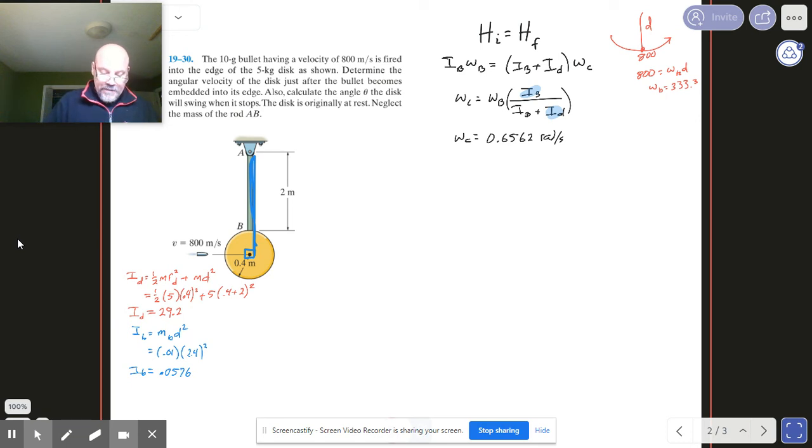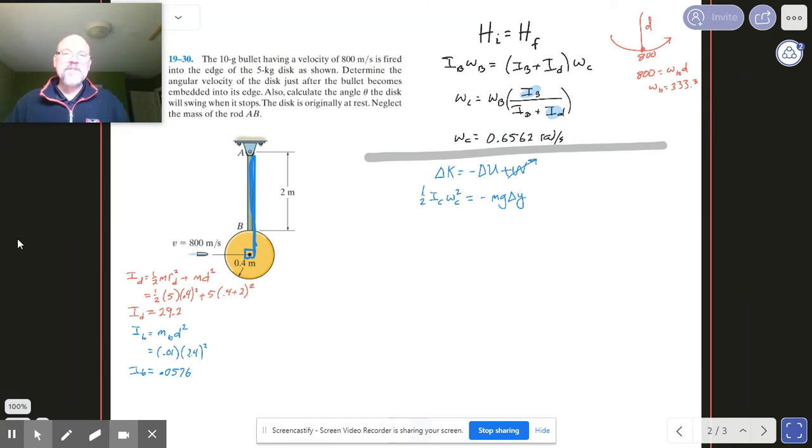And so now we've got to change to our other bag of tricks and we got to think about what's happening with the energy. So that gets us back to our friendly neighborhood energy equation—it's our first law of thermodynamics there. When we look at this thing, what we're going to have is we're going to have one-half the combined moment of inertia, the combined angular velocity squared, and that's going to be minus mg delta y. We're going to use gravity as a potential energy term rather than a work term, and so we got no work going on in our particular situation.